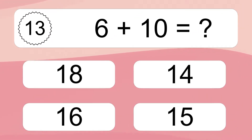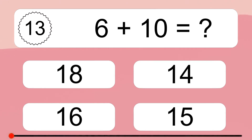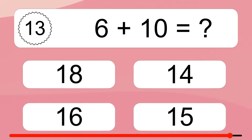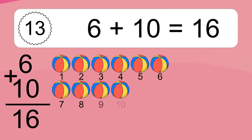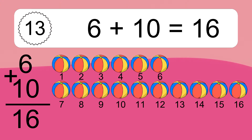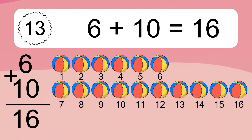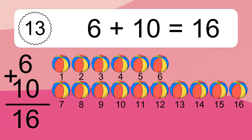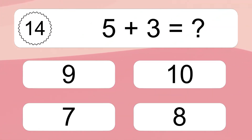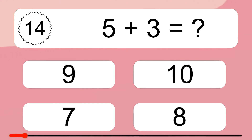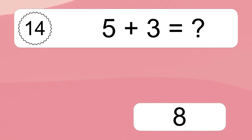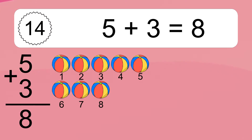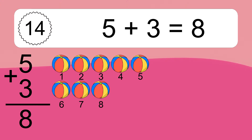6 plus 10 equals what? Let's count it: 1, 2, 3, 4, 5, 6, 7, 8, 9, 10, 11, 12, 13, 14, 15, 16, 17, 18. 6 plus 10 equals 16.